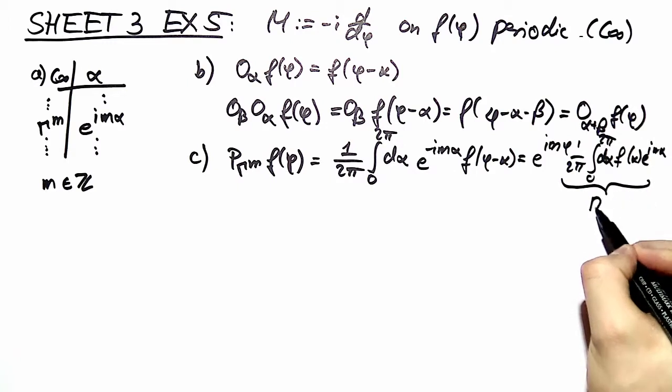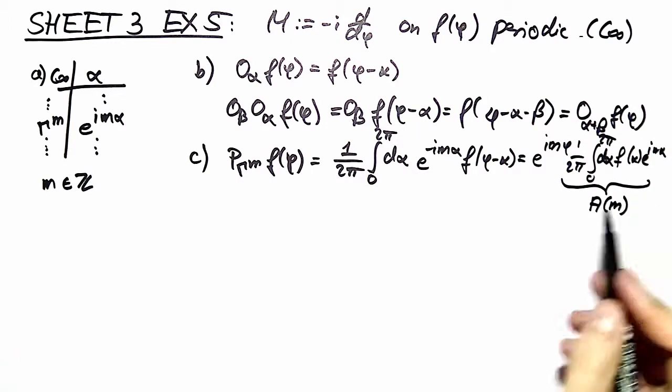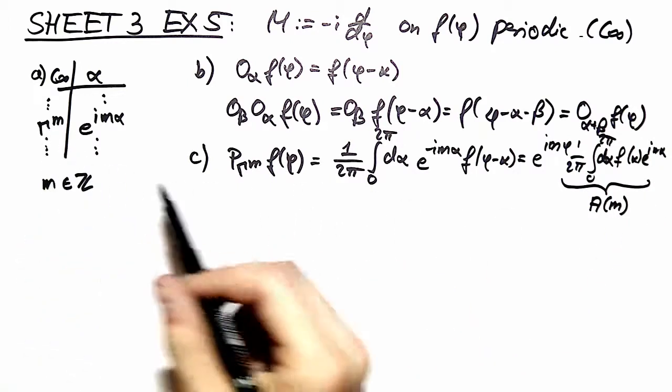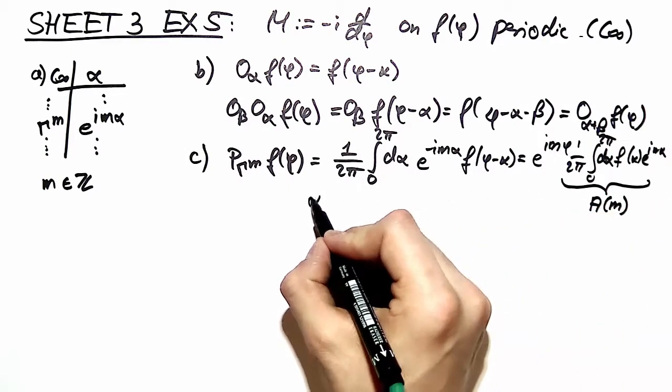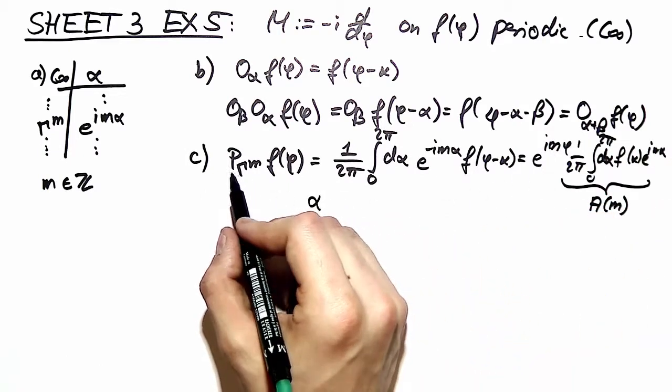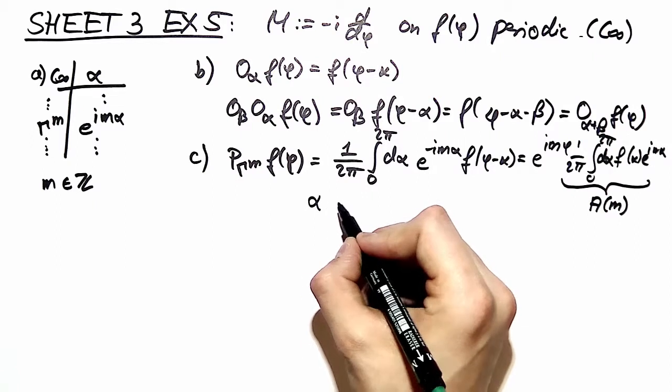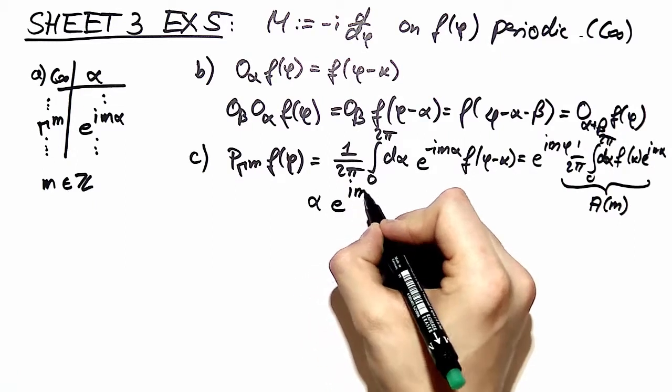This is nothing else than a number dependent on m. m again is the label of our representation. And our projected basis function is proportional to e to the im phi.